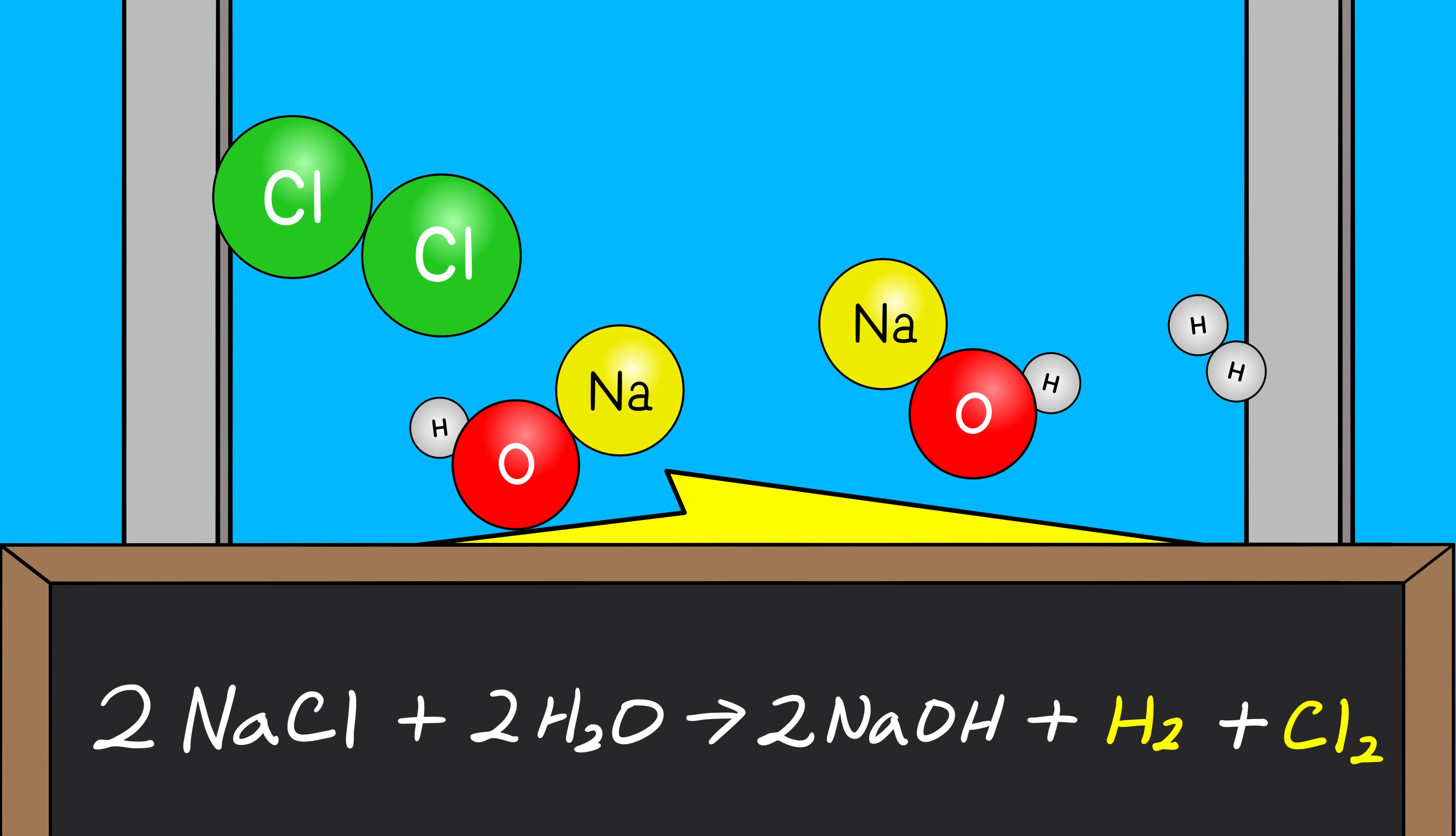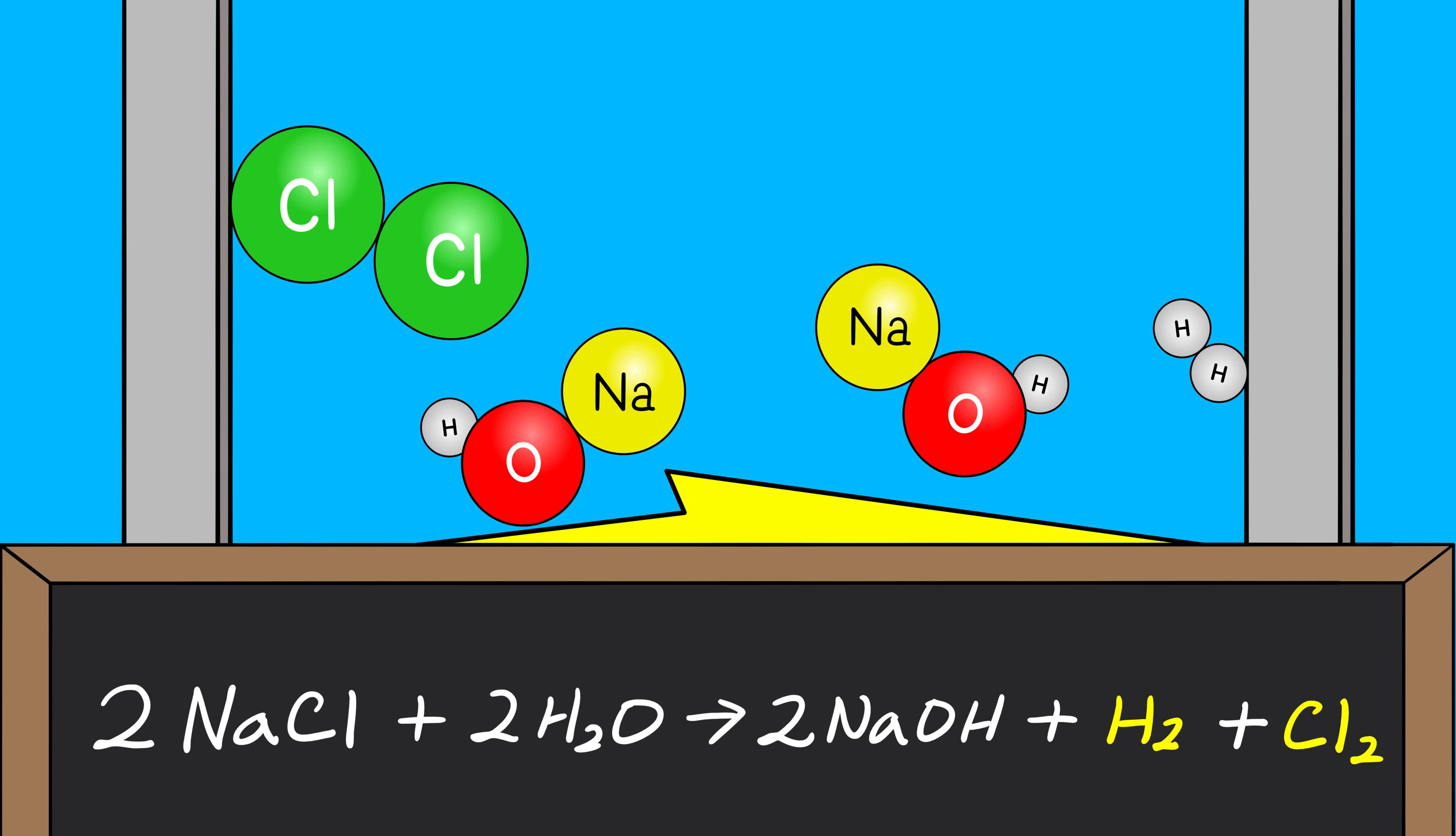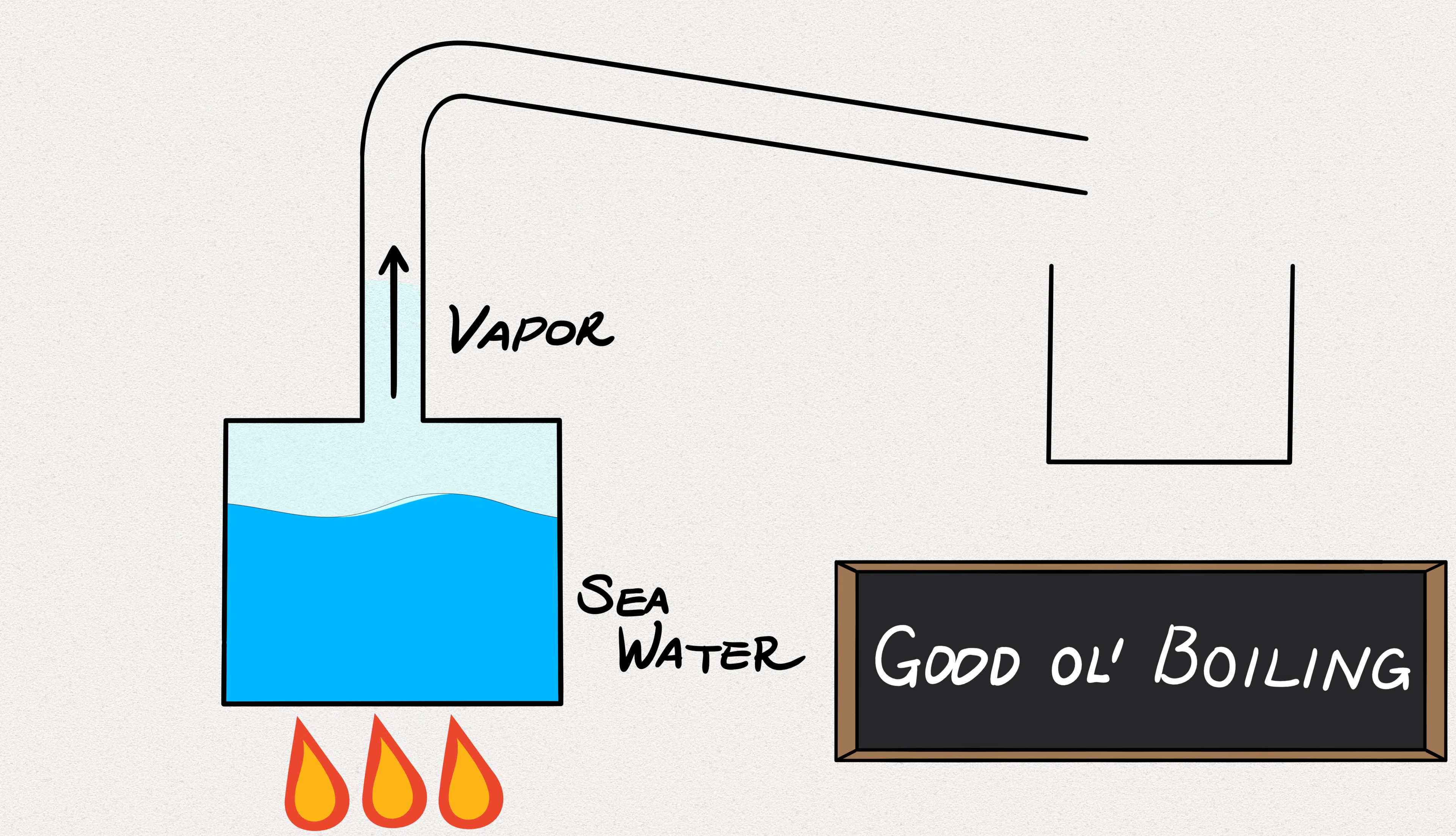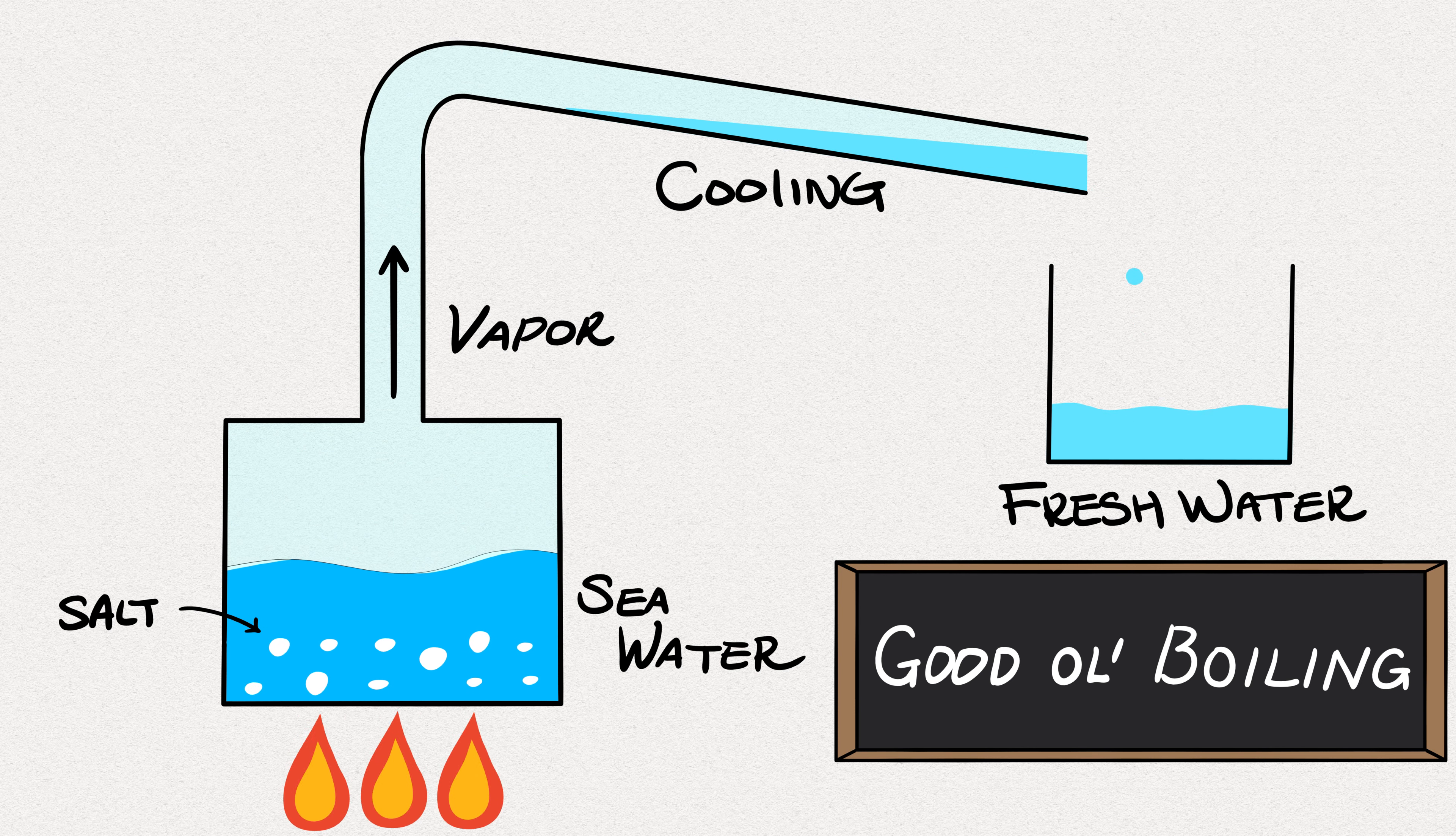So before we do anything, we need to first remove the salt. Desalination can be done using either of two methods. First, just boil the seawater. Water will evaporate leaving the salt behind. We then condense the water vapors to get fresh water.